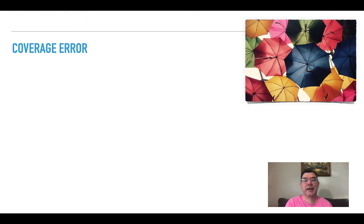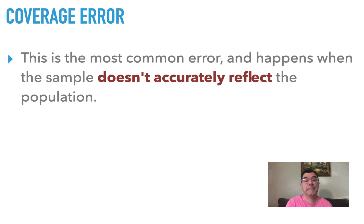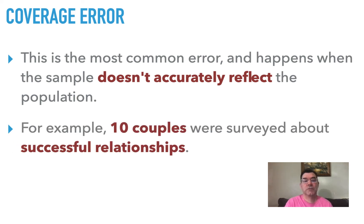The final type of error is what's called a coverage error. That basically means that your sample doesn't accurately reflect the population. You always want your sample to be proportional to the population so that it represents the population. For example, if you were asking about successful relationships and you decided to ask 10 couples about what it means to be in a successful relationship, that doesn't really accurately reflect the population because the population isn't all coupled together.